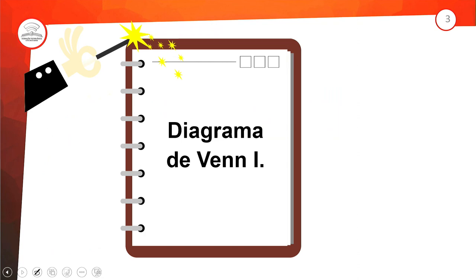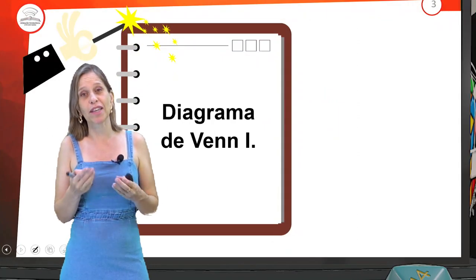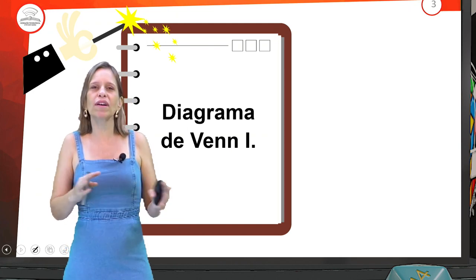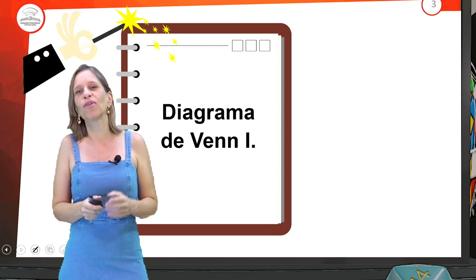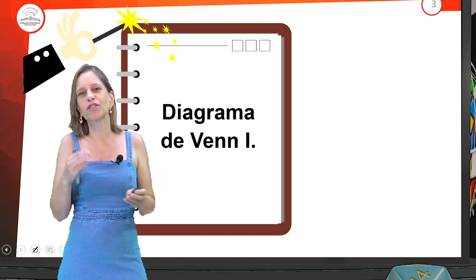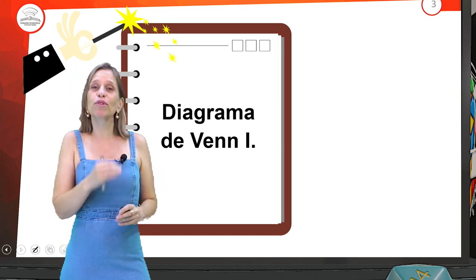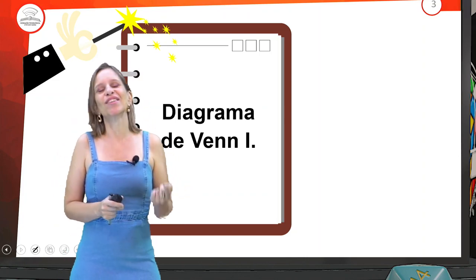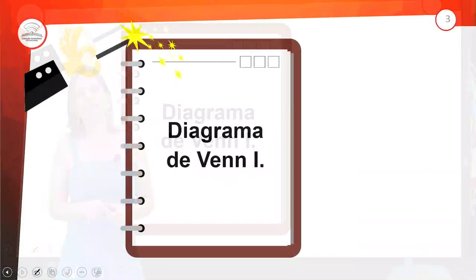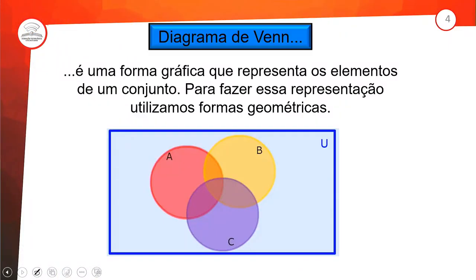O diagrama de Venn vem trazendo muita coisa legal. A gente vai entender a parte que é comum a diversos setores. Quando a gente usa o diagrama, são aqueles círculos — a gente vai trabalhar de maneira circular e vai distribuindo os valores ali dentro. O diagrama de Venn é uma forma gráfica que representa os elementos de um conjunto. Para fazer essa representação, a gente usa formas geométricas.